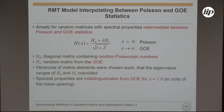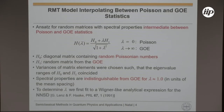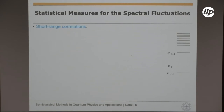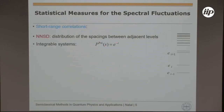In this interpolating ensemble, H0 is a diagonal matrix containing random Poissonian numbers and H1 is a random matrix from the GOE or in some cases from the GUE. The variances of the matrix elements have to be chosen such that the eigenvalue spectra of H0 and H1 are in the same range. When lambda goes to infinity you get GOE, and for lambda equal to zero you get Poisson — this already happens for values of lambda of order one, depending on how you choose the variances.